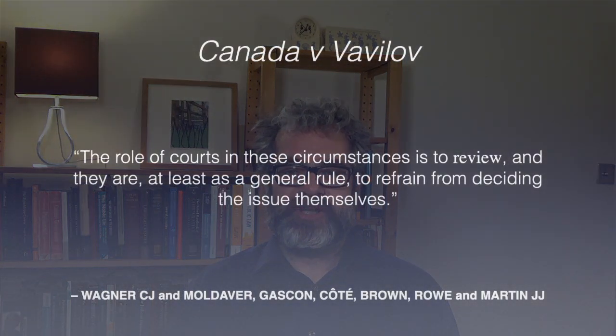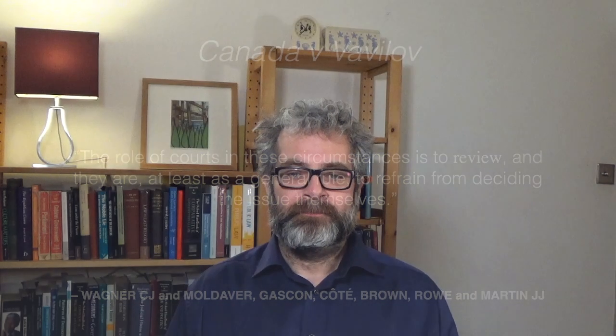As far as the reasoning process is concerned, the court emphasises at paragraph 83 that the role of courts in these circumstances is to review, and they are — at least as a general rule — to refrain from deciding the issue themselves. The Supreme Court of Canada also departs from what it said about reasonableness review in previous case law, including Dunsmuir. Not only should the court refrain from substituting its own view of the decision, it should not even — as Dunsmuir suggested — attempt to assess whether the decision is within the range of decisions that are legally permissible. Rather, the reviewing court must consider only whether the decision made by the administrative decision maker, including both the rationale for the decision and the outcome to which it led, was unreasonable.